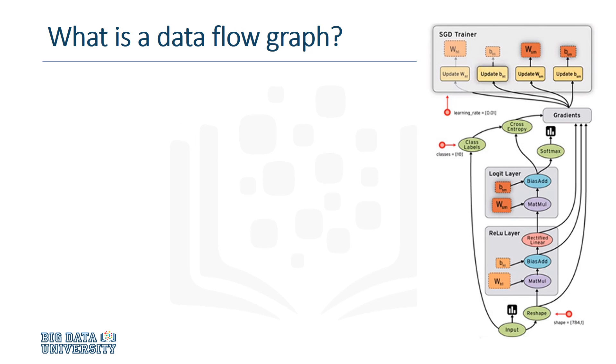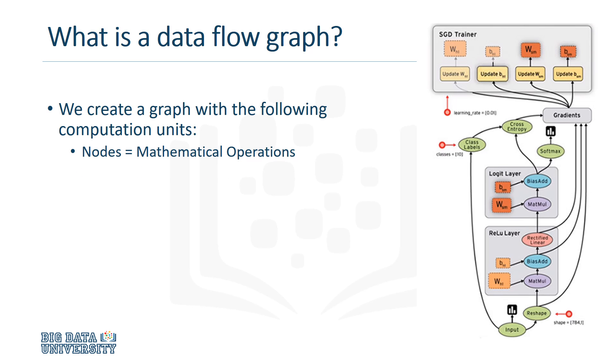TensorFlow's structure is based on the execution of a dataflow graph. A dataflow graph has two basic units. A node represents a mathematical operation, and an edge represents a multidimensional array, known as a tensor. So this high-level abstraction reveals how the data flows between operations.